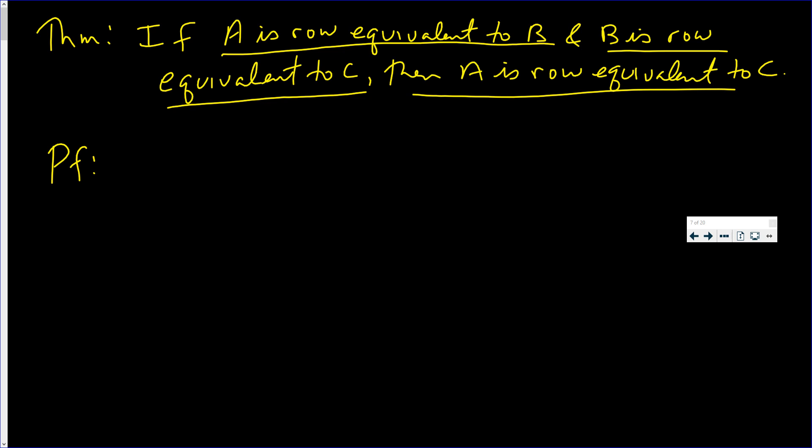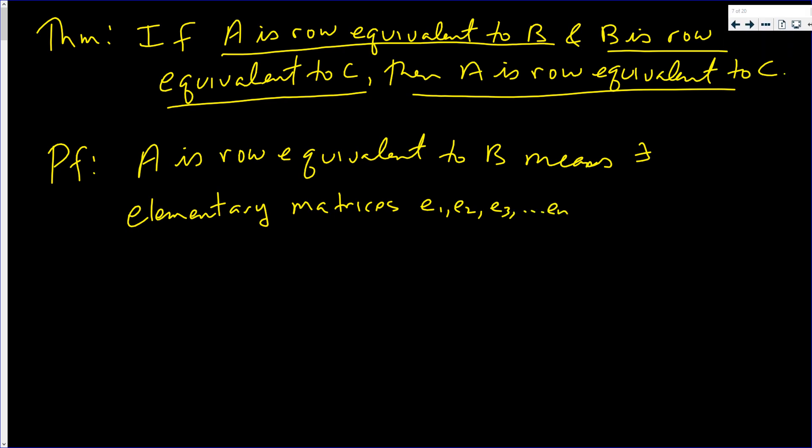The proof is by definition. A is row equivalent to B means there exist elementary matrices E1, E2, E3 up to E sub n such that A is equal to E1, E2 up to En times B.